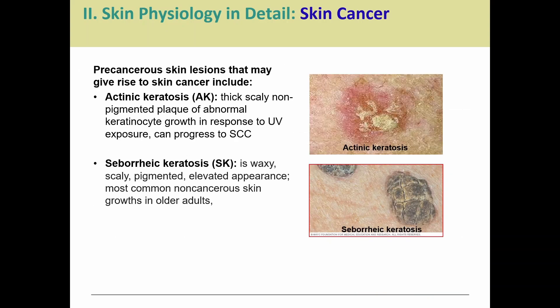Some precancerous lesions serve as warnings that you might develop skin cancer. Actinic keratosis, or AK, involves small scaly, non-pigmented plaques of abnormal growth that can progress to squamous cell carcinoma, so it's important to get it checked. Seborrheic keratosis has a waxy, scaly appearance — almost like a cracked mole — and is very common in older adults. Both are not cancer themselves, but should be monitored or treated before they become cancerous.